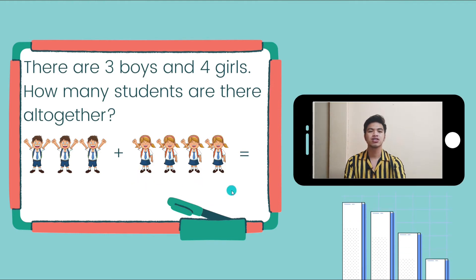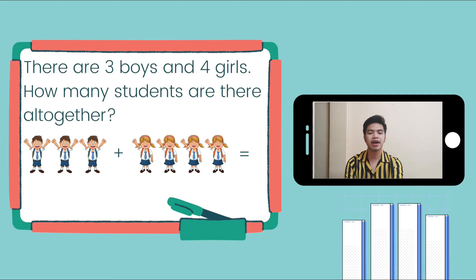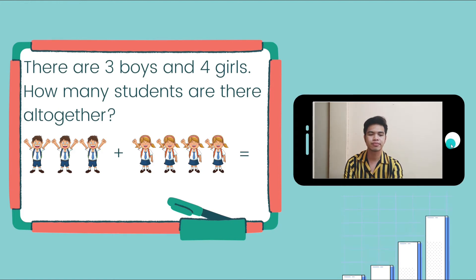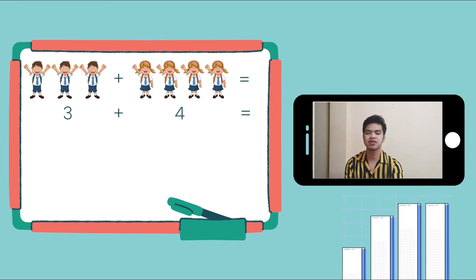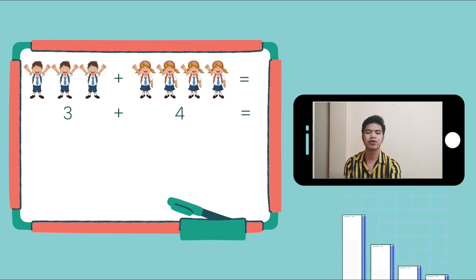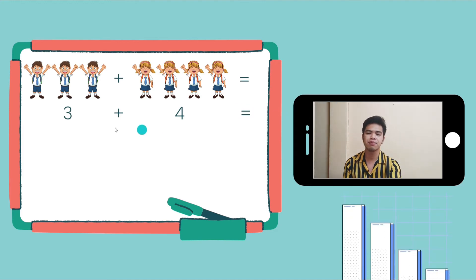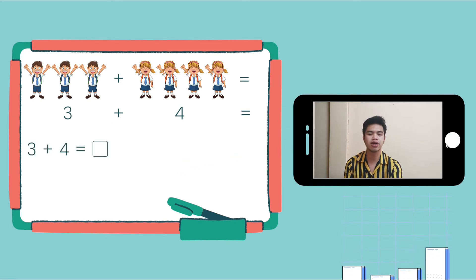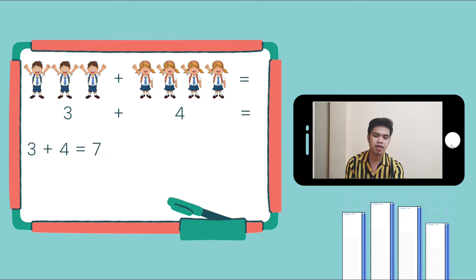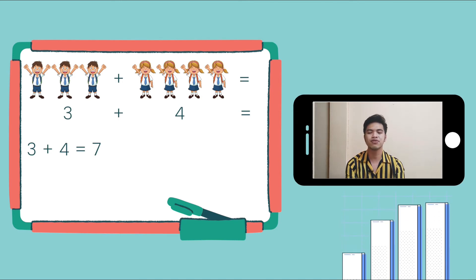So, the question is, how many students are there all together? We have to find out how many students are there all in all. In order to solve the problem, we have to write the number sentence first. Here, we have 3 plus 4 equals blank. We can use box to represent the unknown. And after that, we're going to have our final answer. 3 plus 4 is equal to 7.